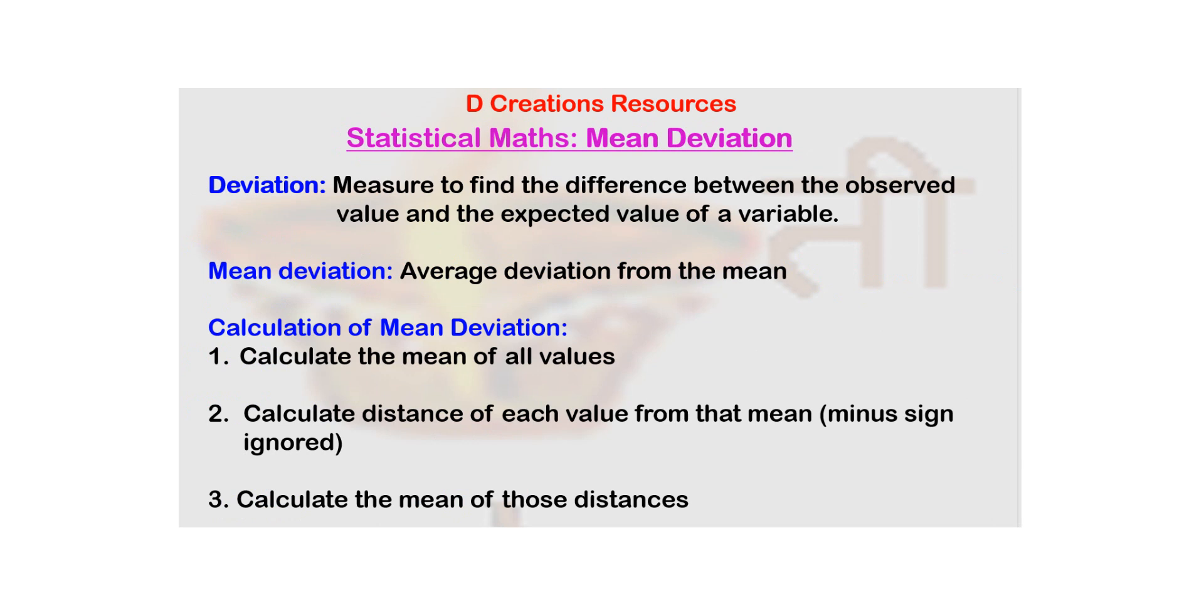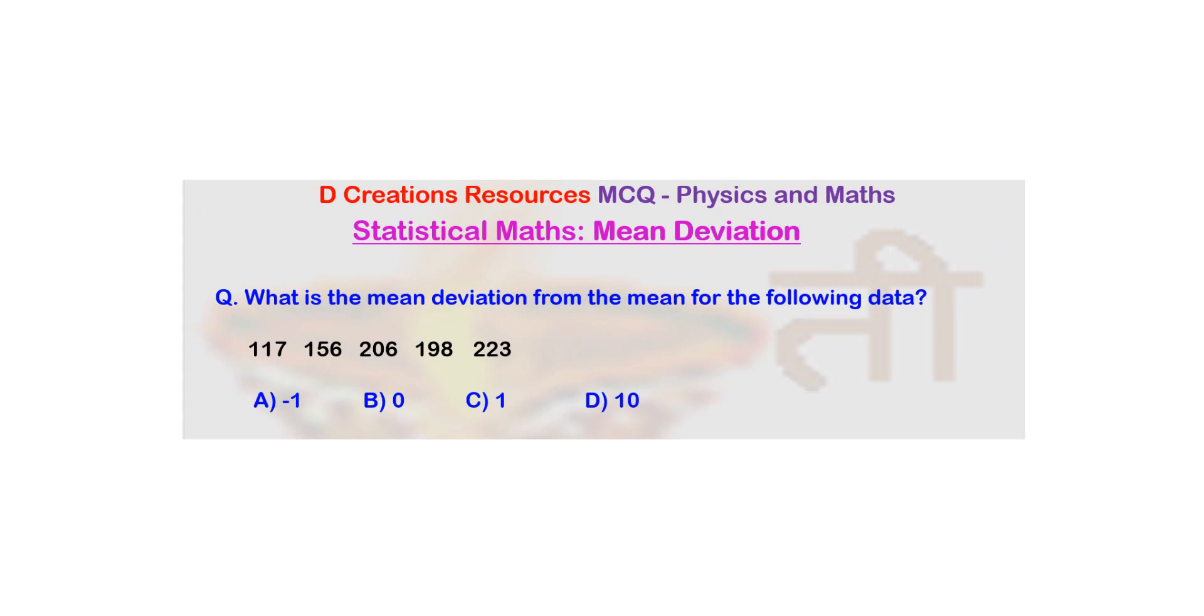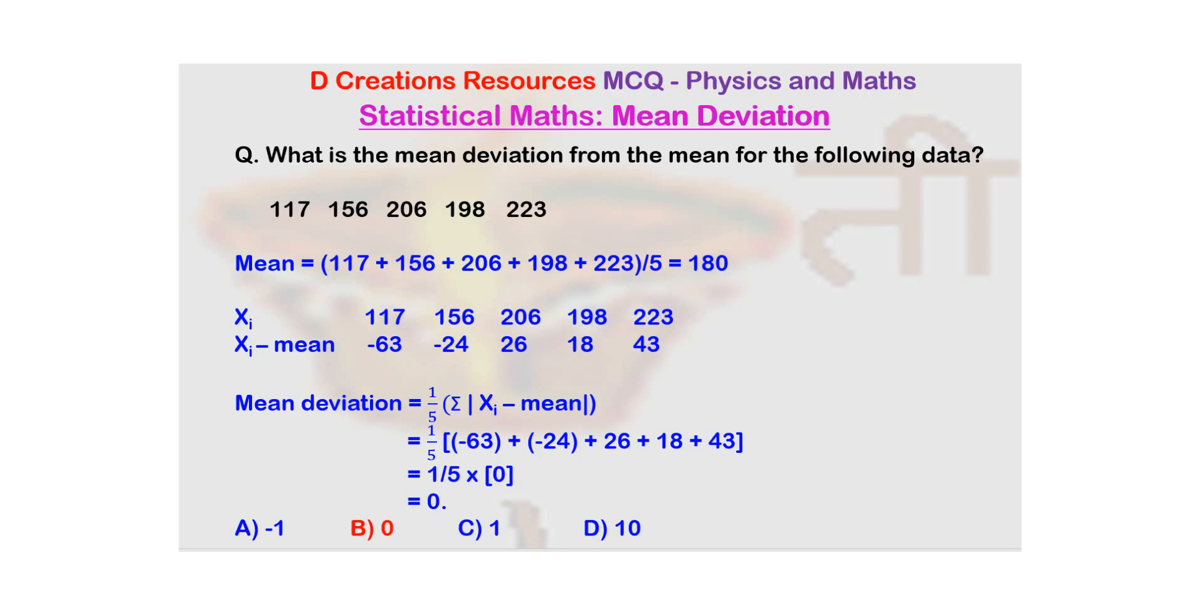Finally, you will calculate mean of those distances. So let us do it for this data. What is the first step? Add them up and divide by 5 to get the average. If you add them up and divide by 5, you get 180 as the answer. This is your reference point.